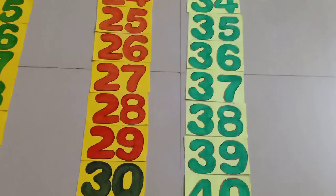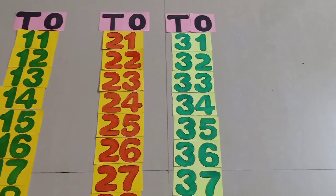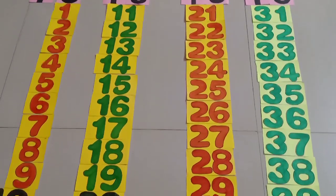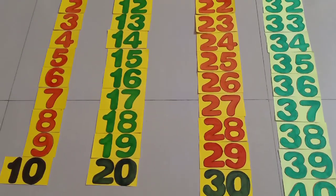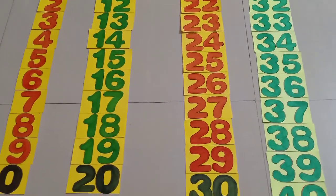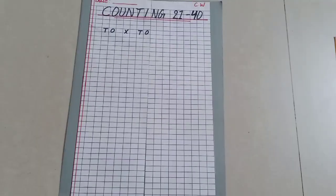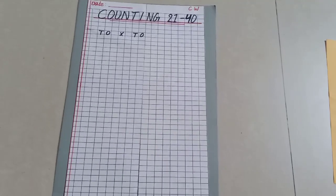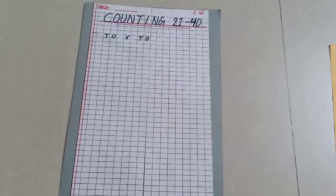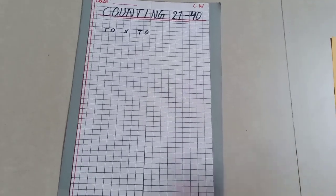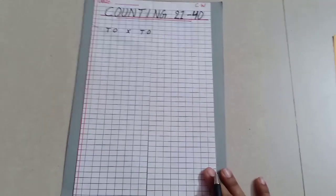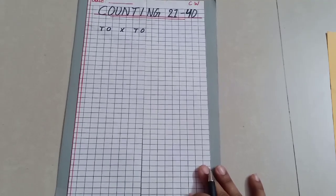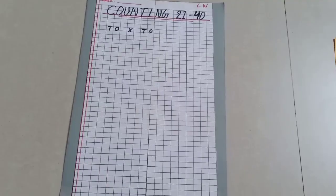Students, that was the oral part. As you can see, the previous class covered counting from 1 to 20, and today's class covers counting from 21 to 40. Now we will go to the written part — I will show you how to write the numbers. I am doing it on a page because I don't have a copy, but remember you have to do it in your maths copy. If you don't have a new one, you can use your old maths copy.